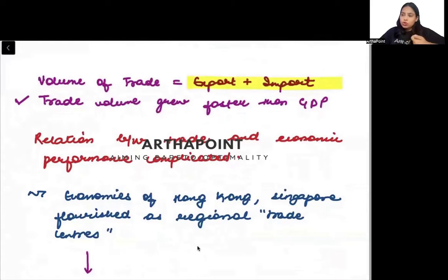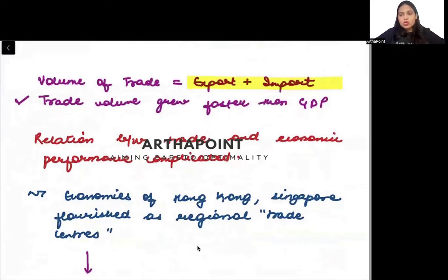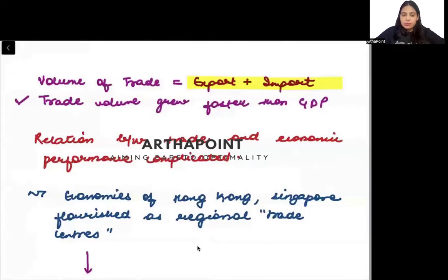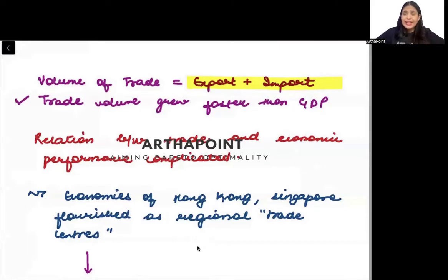The countries that are producing more output will also be trading more, and those countries which are producing less output will be trading less. Of course, if a country doesn't produce output, there are less chances that it will be able to export something. So trade volumes and GDP are related to each other.